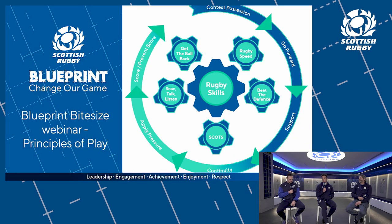Welcome to Blueprint Blethers number six, here with Scott Riddle and Chris Reid, two of our game development managers. For the next while we're going to talk about the principles of play and the rugby cog, which is part of our blueprint. The principles of play is a cycle of how the game works through contest to possession, go forward, support, continuity, to apply pressure, which then either results in a score or the cycle continues again until you do so or lose possession.